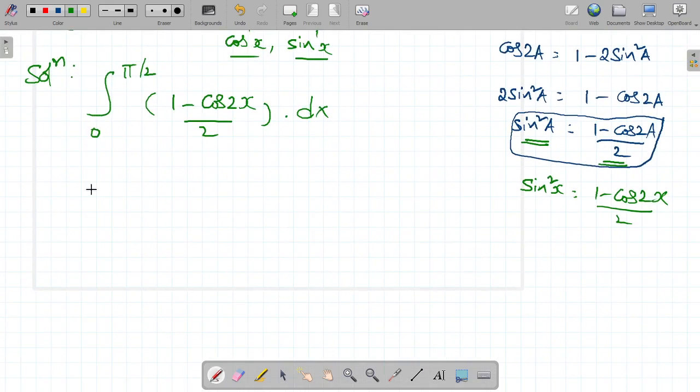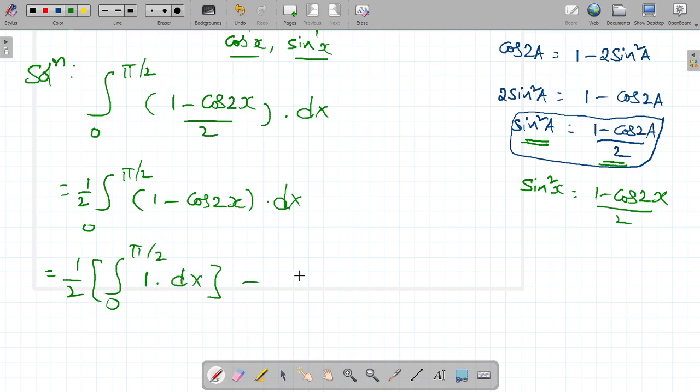0 to pi by 2, take 1 by 2 outside, 1 minus cos 2x into dx. So, 1 by 2 integral 0 to pi by 2. So, 1 by 2 integral 0 to pi by 2, 1 dx minus 1 by 2 integral cos 2x dx.